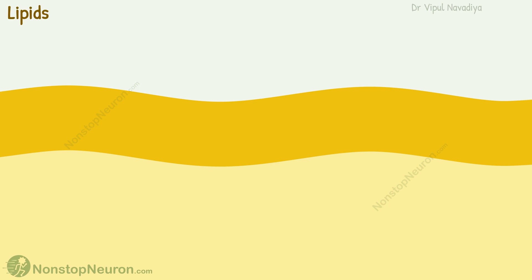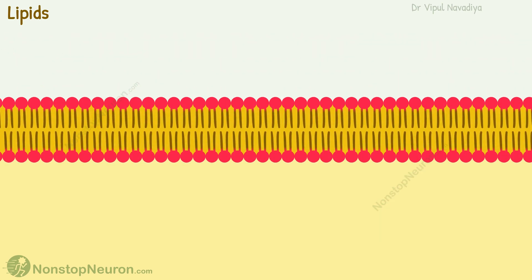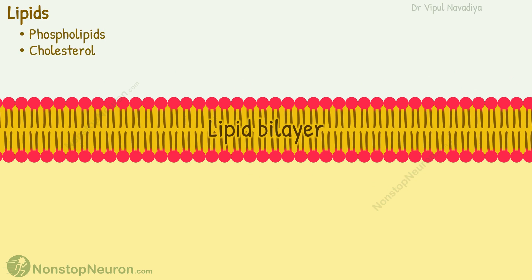First, the lipids. The lipids are arranged in two layers, like a sandwich. Thus they make a lipid bilayer. It mainly has two types of lipids: phospholipids and cholesterol. Along with them, there are other types of lipids as well. Phospholipids are by far the most abundant among them.